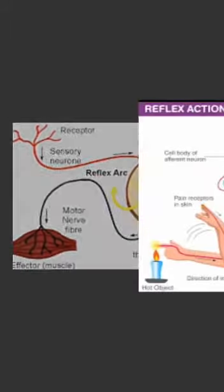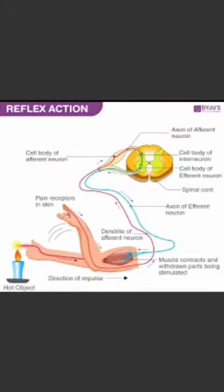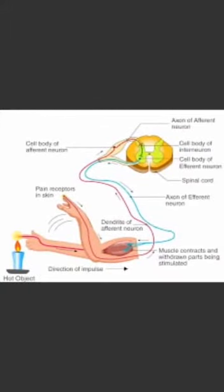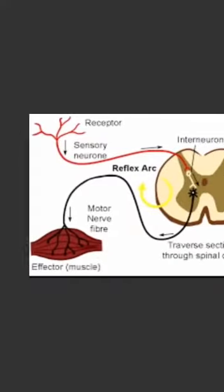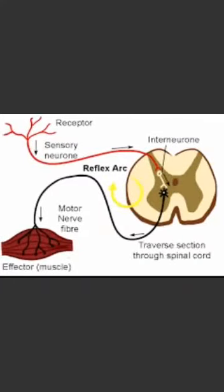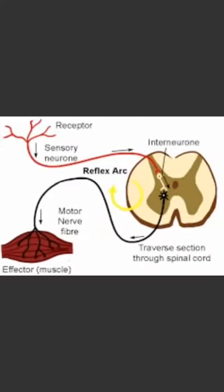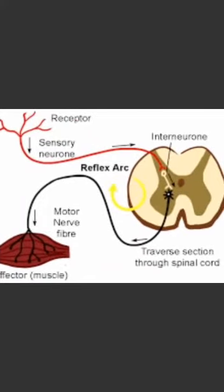The muscles in our arm contract and we withdraw our hand immediately from the hot pan or hot vessel. This entire process occurs without our consciousness.